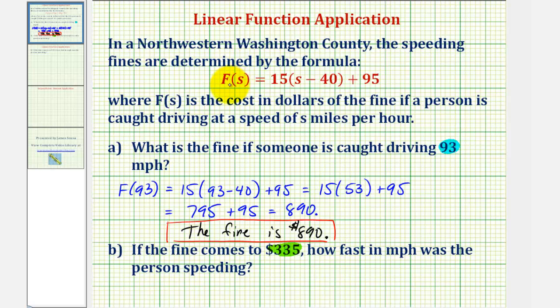So in this case, we'll substitute 335 for f of s and solve for s. So this would give us the equation 335 equals 15 times the quantity s minus 40 plus 95. Now let's go ahead and solve for s on the next slide.